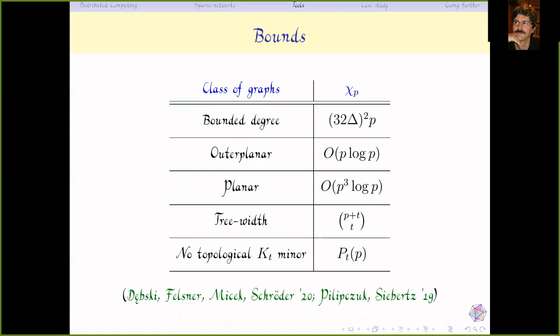Some practical bounds on the number of colors: for bounded degree, it increases like the square of the maximum degree; for outer planar graphs it grows like p log p; for planar graphs like p³ log p; and in general when you exclude a topological clique, it is polynomial in p.